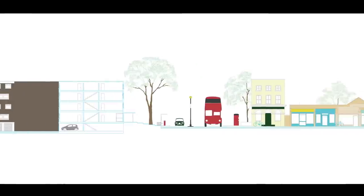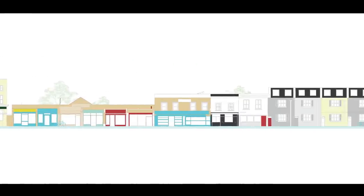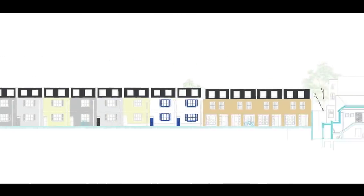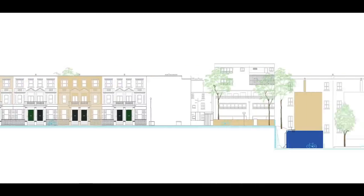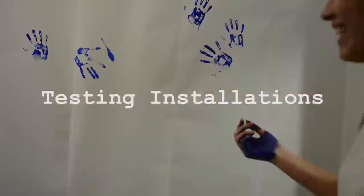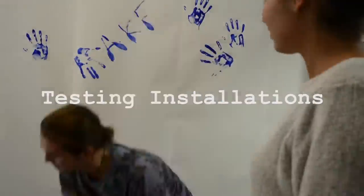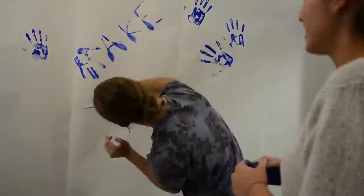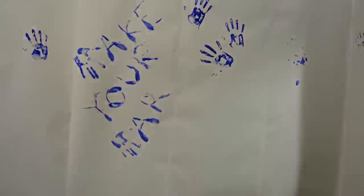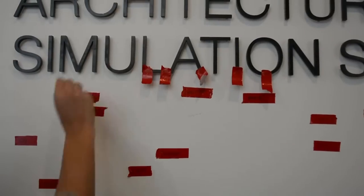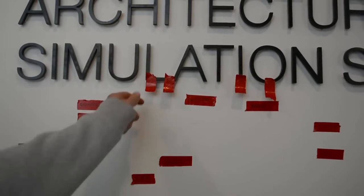This then led on to our second task: to create an installation on site that engaged with the community of West Kensington. We workshopped a few ideas in the studio, then decided for our final installation on site to create a temporary artwork reflective of those who lived there.